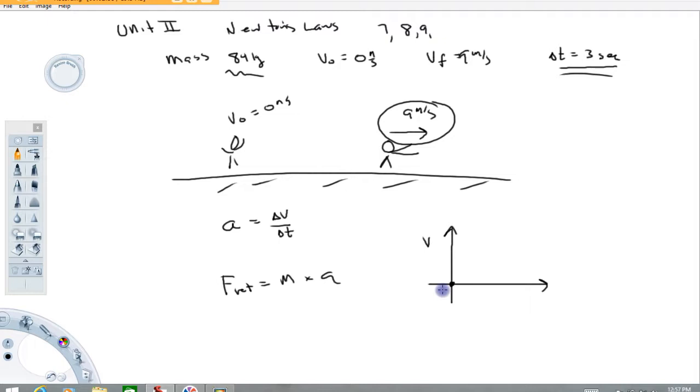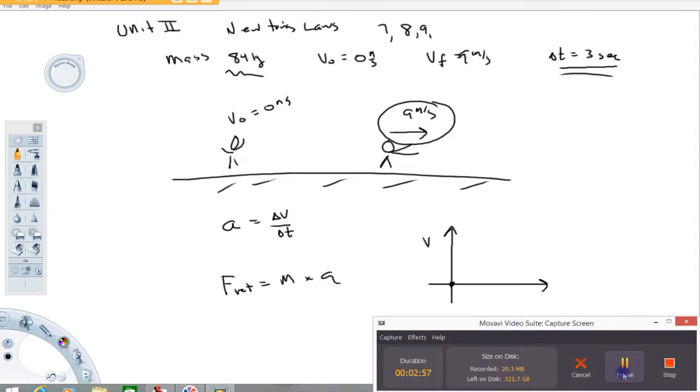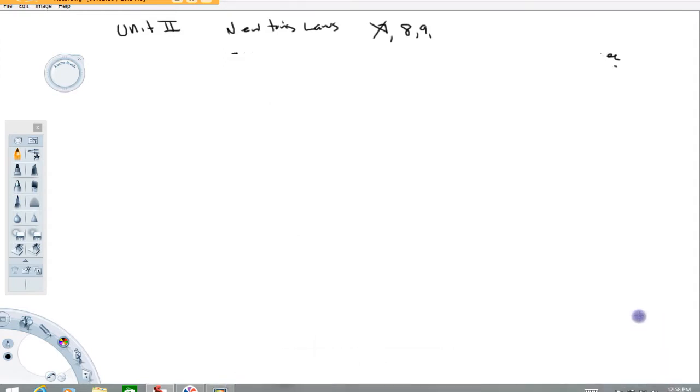That's pretty much number 7 in a nutshell. I'm going to pause for a moment and set up for number 8. Number 8 says a baseball is being caught, its speed goes from 42 meters per second to zero meters per second in 0.008 seconds, its mass is 0.145 kilograms.